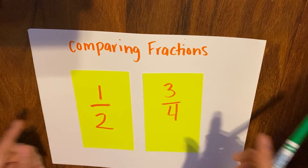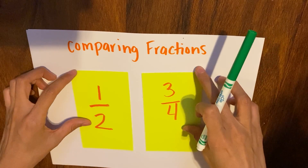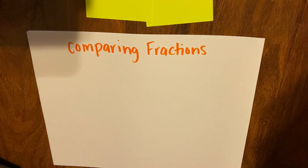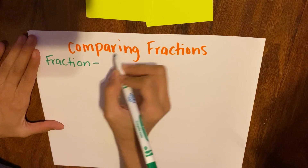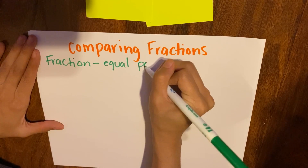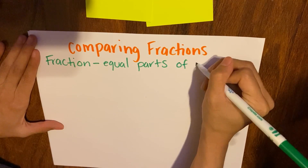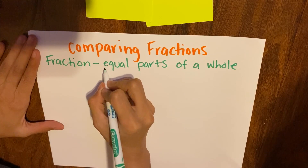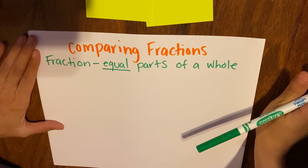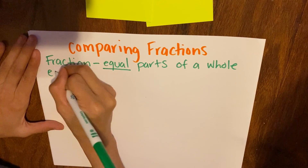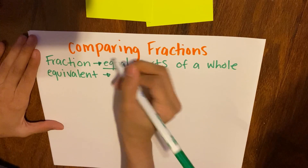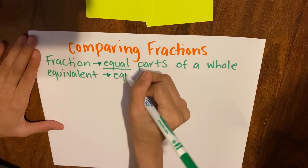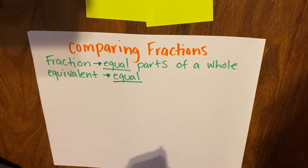We want to know which one is greater than, less than, or if they are equivalent. Now, some things we should know about fractions: a fraction is equal parts of a whole, keyword being equal. Another word I just used was equivalent, and equivalent means the fractions will be equal — both fractions would be equal.